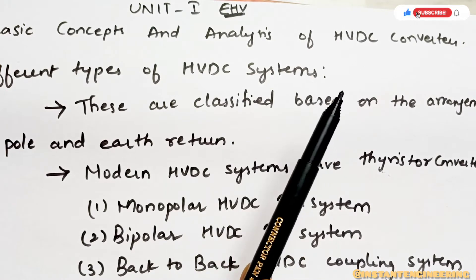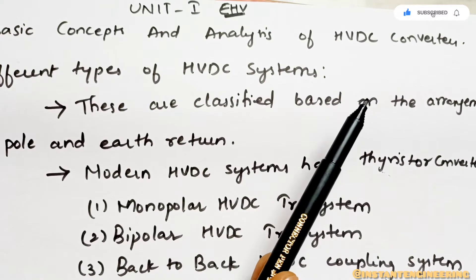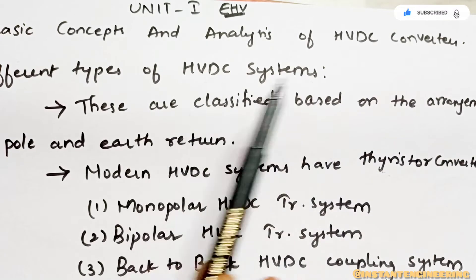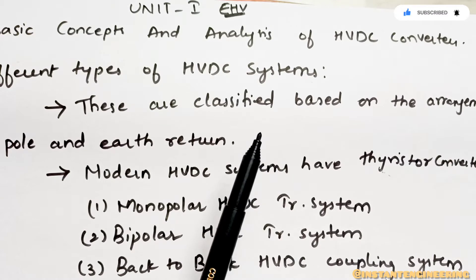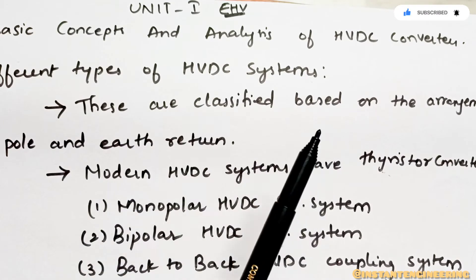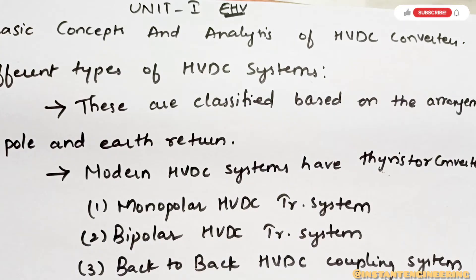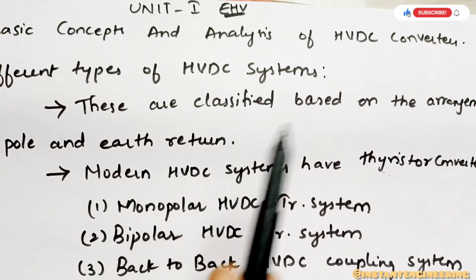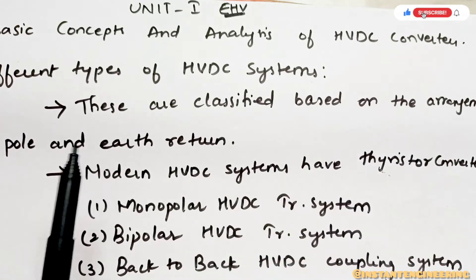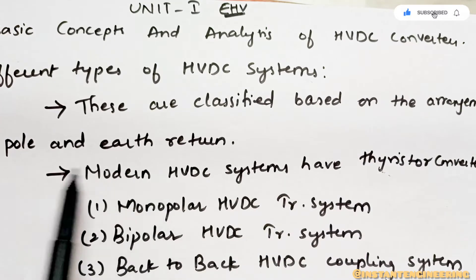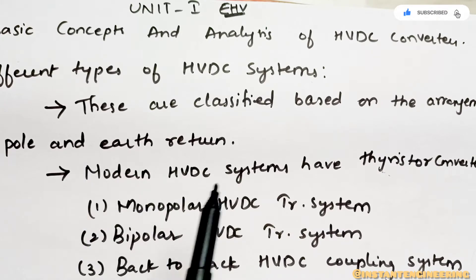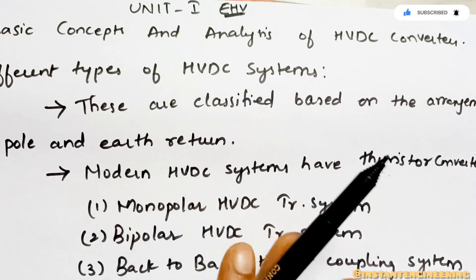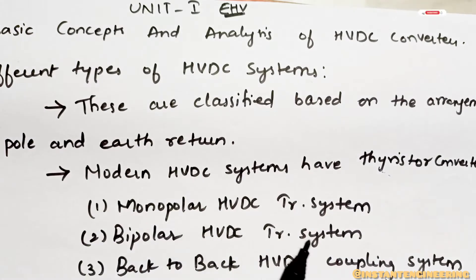What is HVDC and what are the different types of converters in HVDC? Coming to the first topic, you have to know what is meant by this HVDC system. Basically all HVDC systems are divided based upon their pole and earth arrangements. Based on those connections, HVDC systems are classified into different types.